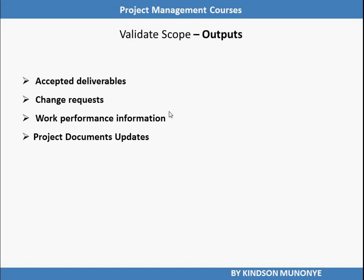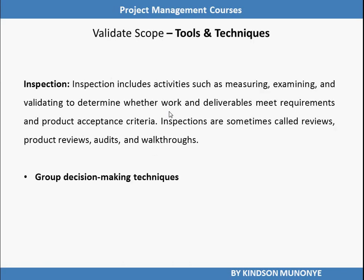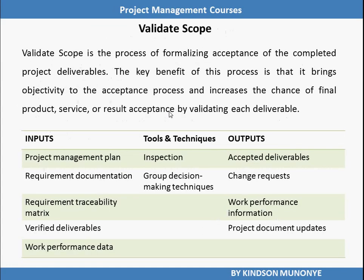This is where we come close to the end of the Validate Scope process. A brief recap: take note of the inputs — Project Management Plan, Requirements Documentation, Requirements Traceability Matrix, and Verified Deliverables. Quick quiz: where do we get the Verified Deliverables from? Verified Deliverables is an output of the Control Quality process. Work Performance Data is also an input. The two tools and techniques are Inspection and Group Decision Making Techniques. Outputs are Accepted Deliverables, Change Requests, Work Performance Information, and Project Document Updates.